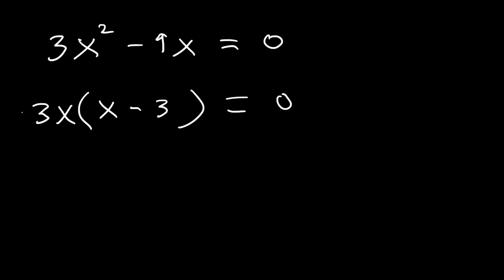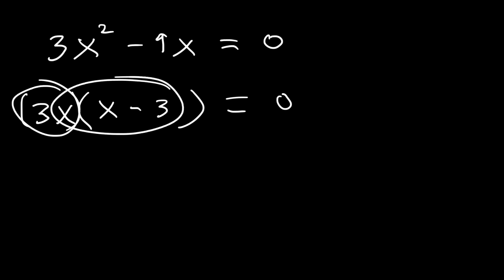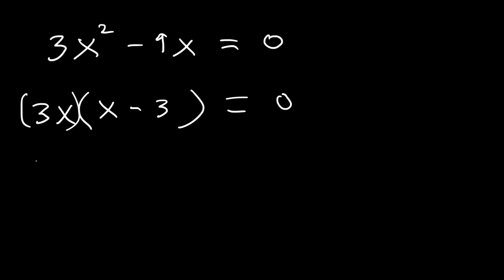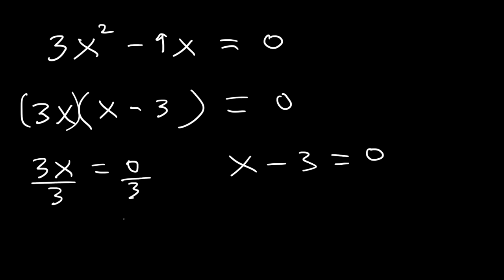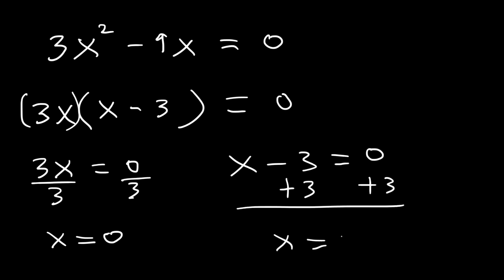Now what you need to do is set each factor equal to zero. We're going to set 3x equal to zero and x minus 3 equal to zero. If you divide both sides by 3, zero divided by 3 is zero, so the first answer is x is equal to zero. For the second one, we need to add 3 to both sides. So we get two answers: zero and three.